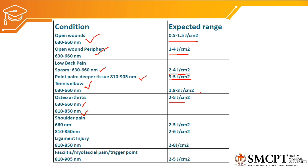For shoulder pain, we can use 2 to 5 joules per centimeter square with visible red, or 2 to 6 joules per centimeter square with infrared laser. For ligament injuries, which are deep-seated structures, we use infrared laser with an intensity of 2 to 8 joules per centimeter square. For trigger points and myofascial pain, also deep-seated, we use infrared laser with an intensity of 2 to 5 joules per centimeter square.